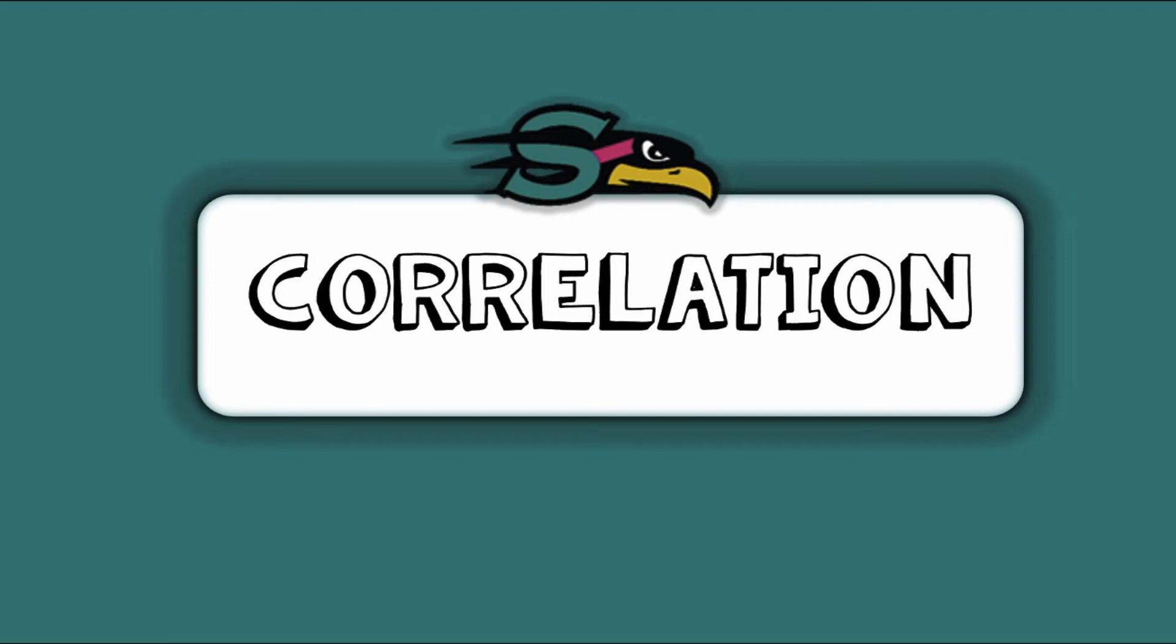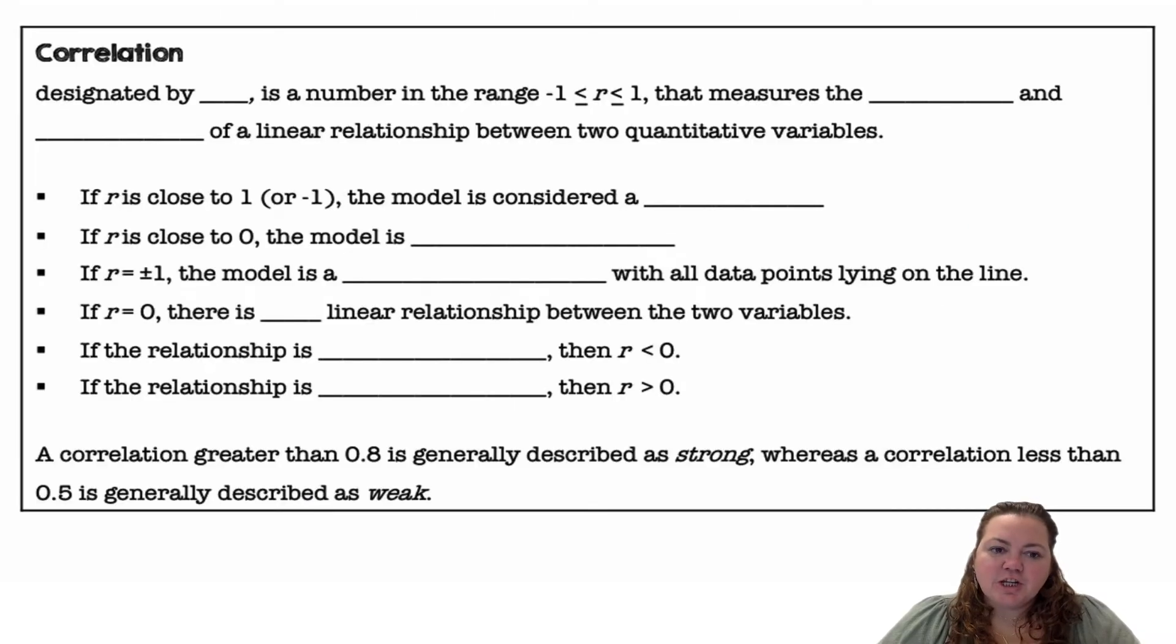Hey there Seahawks, it's Ms. Adams and in this video we're going to learn about correlation. Alright, so correlation is designated by the letter R and it uses a range of numbers between negative 1 and 1 that measure the strength and direction of a linear relationship between two quantitative variables.